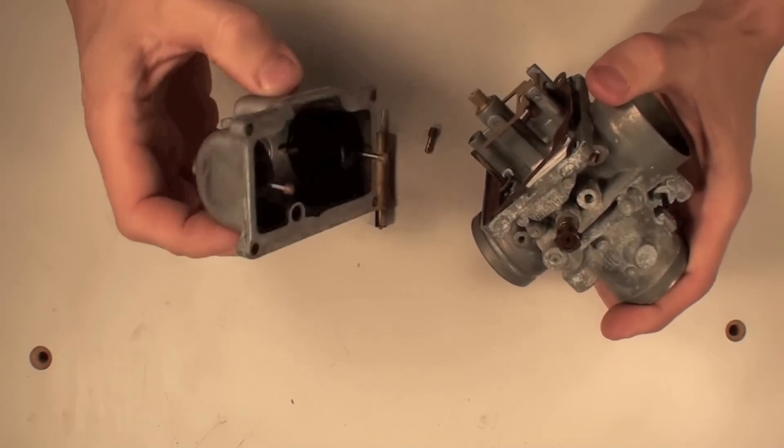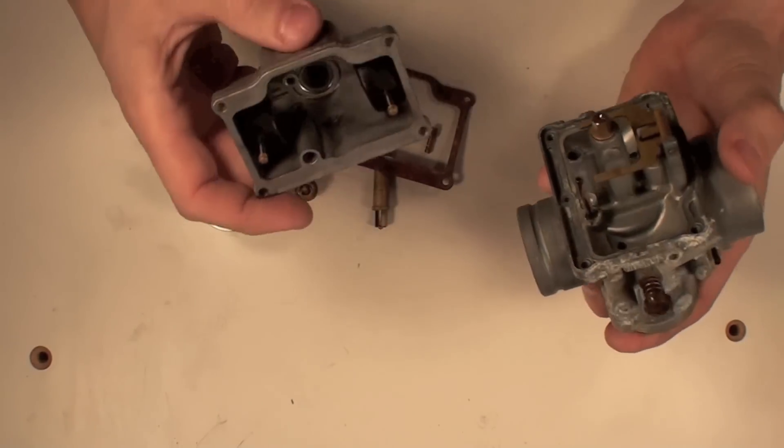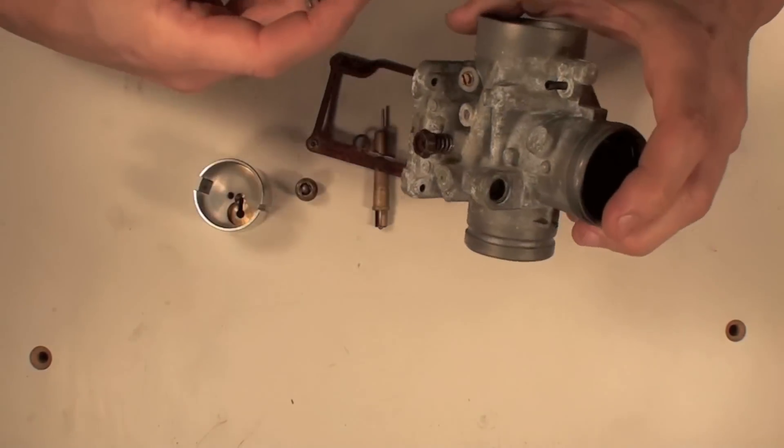The float bowl, of course, with the floats inside, and the carburetor housing with all the parts and pieces attached.